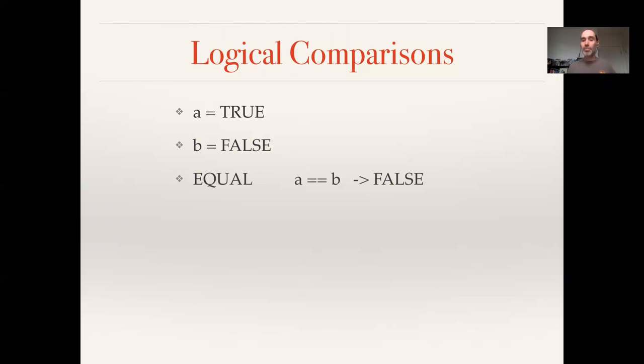And an important bit of syntax here, and this is a mistake everybody makes early on in coding, is to remember that the single equal sign is assignment. So it's saying A equals true, I have a variable A, I'm sticking the value true associated with it.